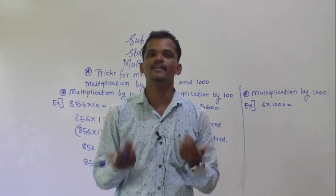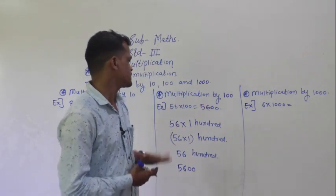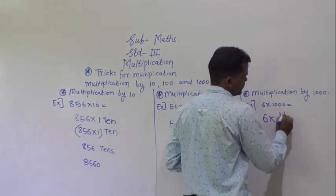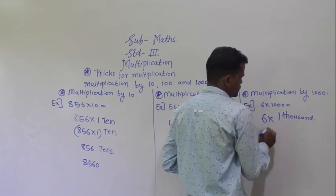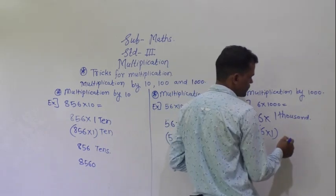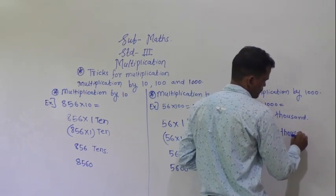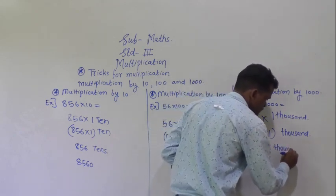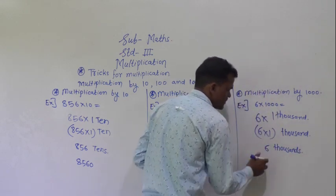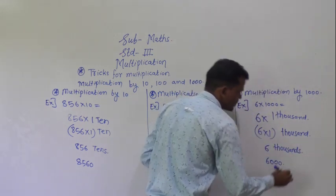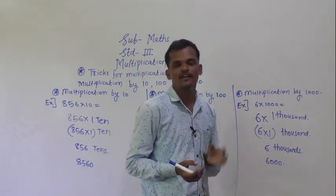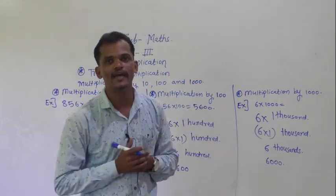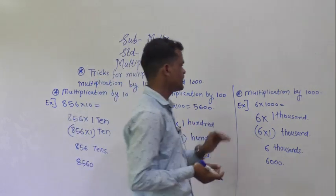Next: 6 into 1000. Write 6 into 1 in brackets and outside of the bracket 1000. 6 into 1 is 6, and the answer is 6000. So what we have learned here: if you are multiplying a number by 1000, put three zeros at the right of that number and you will get the answer directly.